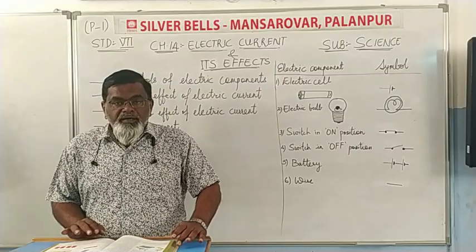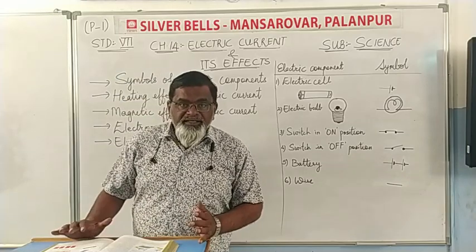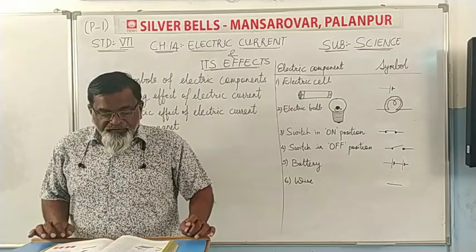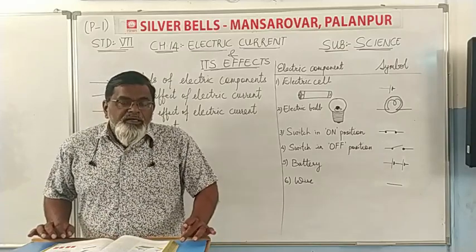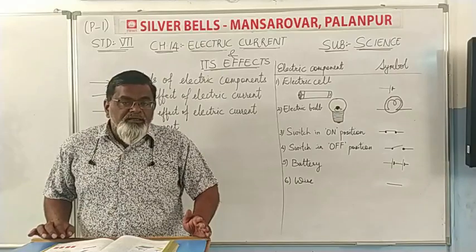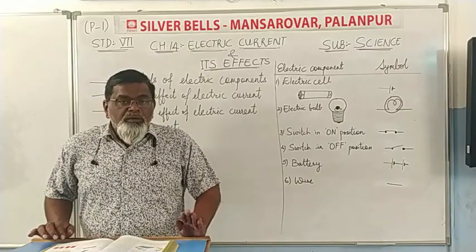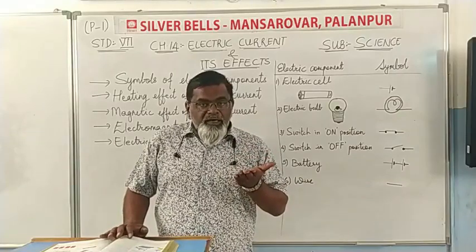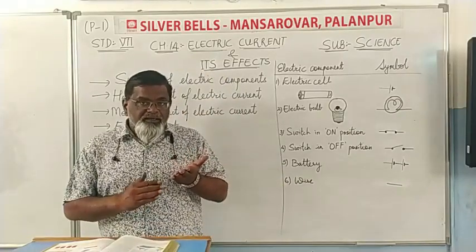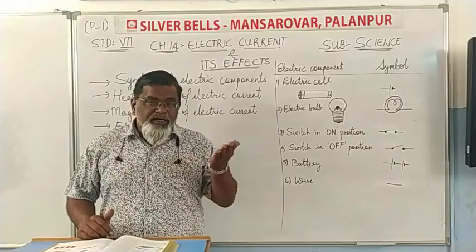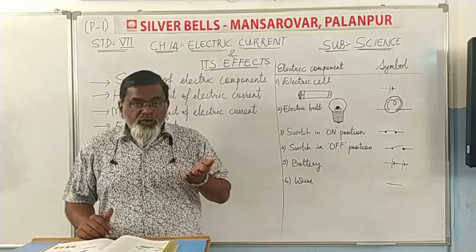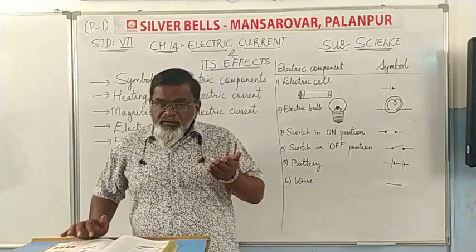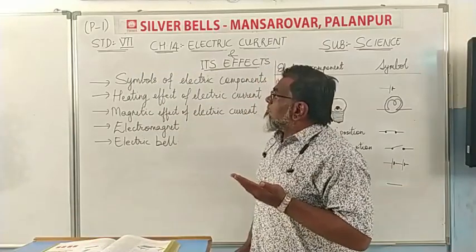Hello students, welcome back. Today we are going to start with a new chapter: Chapter 14, Electric Current and Its Effects. In this chapter, we are going to study our daily life electricity — the lights and appliances we use. This electricity is a current flowing through a conductor, and we will study how electric current flows and its effects.